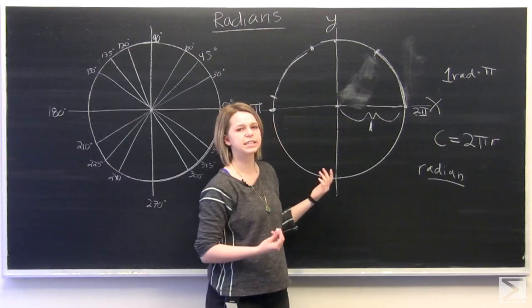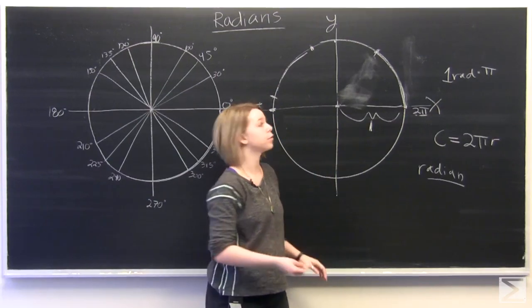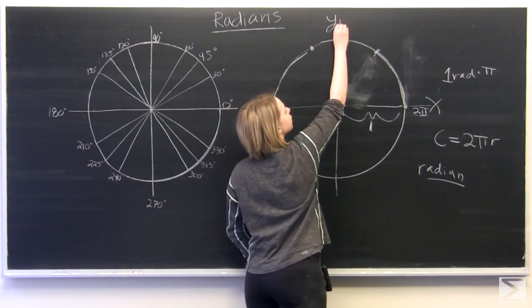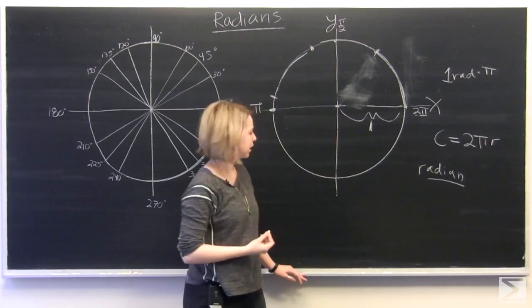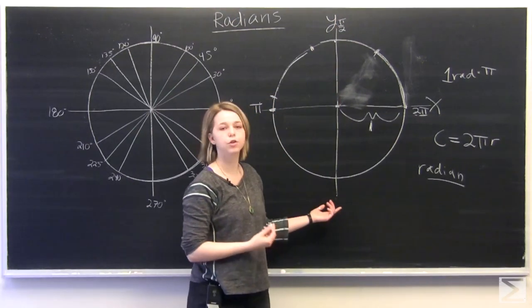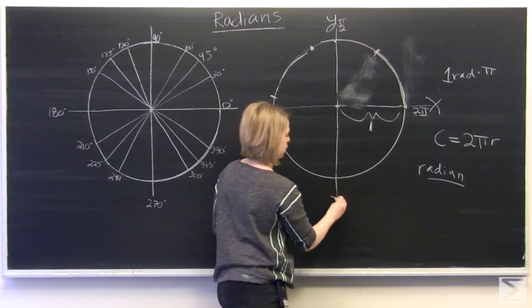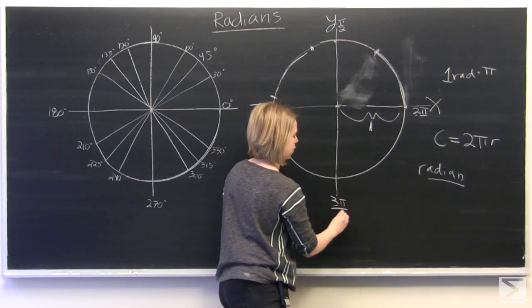And so it's pretty easy to see where half of a radian would be. That will be right at the top, so pi over 2 radians. And this will be 3 halves of a radian, so 3 pi over 2.